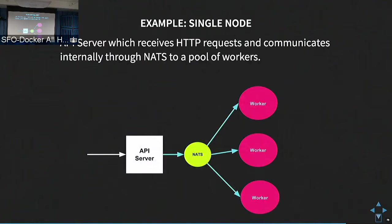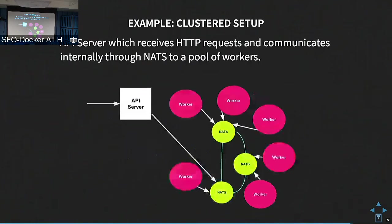The scenario here is that we'll have a server you can externally access over HTTP, connected against NATS, and communicating with a pool of workers to schedule tasks. To make this highly available, we start having a topology where we still have a single API server and the workers are randomly connected to each of the nodes, but communication still happens.